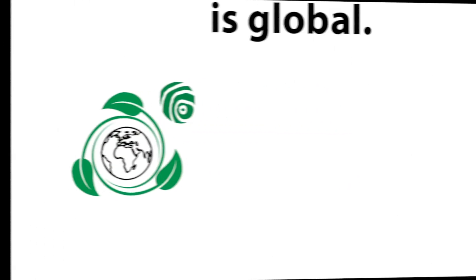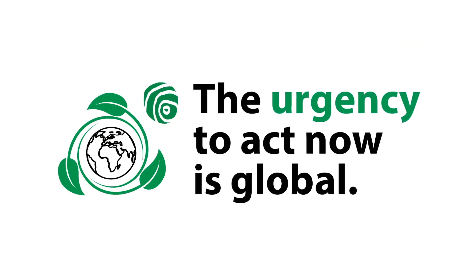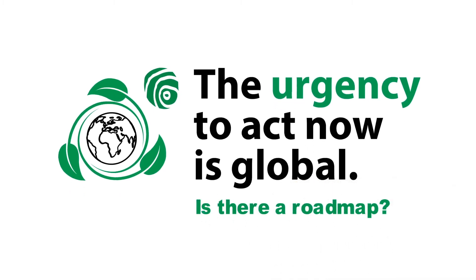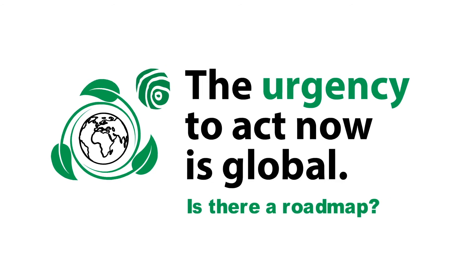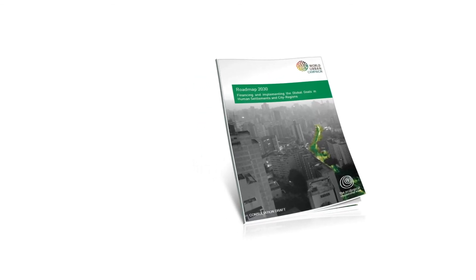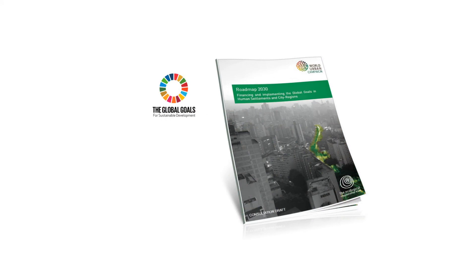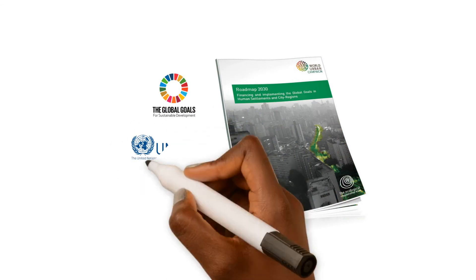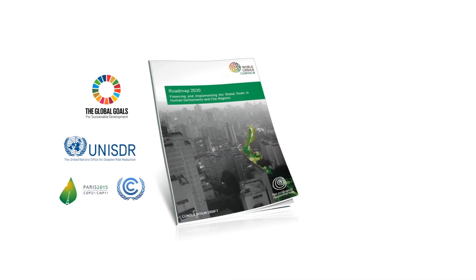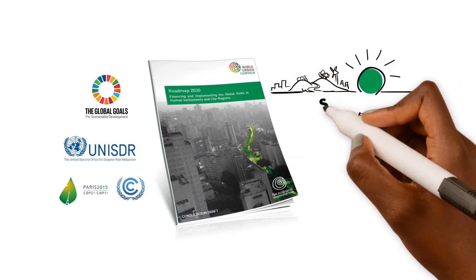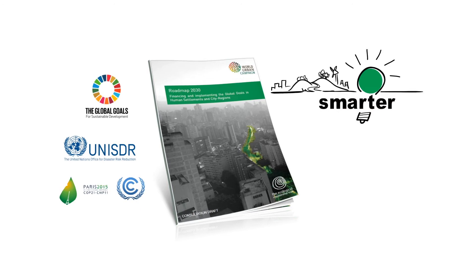The urgency to act now is global. How can every urban area benefit from Resilience.io? Is there a roadmap? Yes. The Roadmap 2030 report was co-created to provide a practical action plan for implementing the global goals and sustainable development objectives nationally and in cities. With the Roadmap, governments, businesses and communities partner in smarter ways to build the enabling environment.